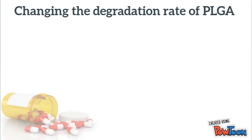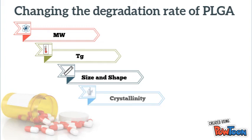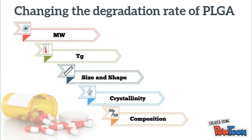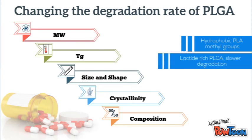The degradation rate of PLGA depends upon numerous factors such as the molecular weight of the polymer, the glass transition temperature, the size and shape of the matrix, and the crystallinity of the polymer — a higher crystallinity involves a faster degradation. The polymer composition also plays a role: the presence of methyl groups in PLA makes it more hydrophobic than PGA, and hence, PLA-rich PLGA polymers are less hydrophilic. They will absorb less water and degrade more slowly.